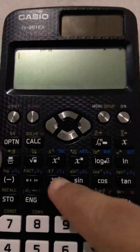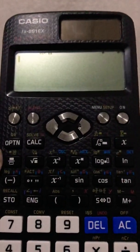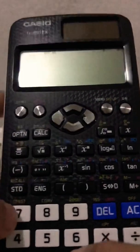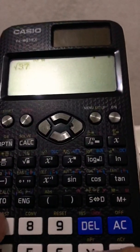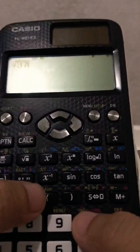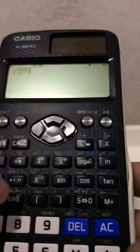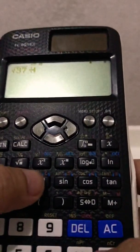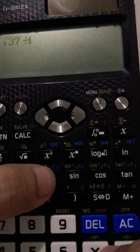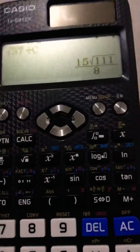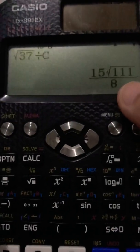So whenever you need that value, that C value to be multiplied or to be operated with any other number, say I have square root of 37 divided by whatever the answer that we got earlier, alpha C, it will right away calculate for you.